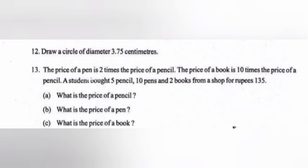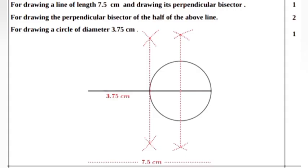12. Draw a circle of diameter 3.75 cm. Answer — Marking scheme: 1 mark for drawing a line of length 7.5 cm and drawing its perpendicular bisector. 1 mark for drawing the perpendicular bisector of half of the above line. 1 mark for drawing a circle of diameter 3.75 cm.